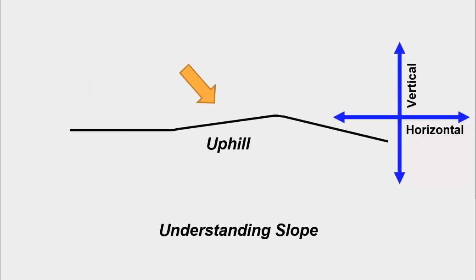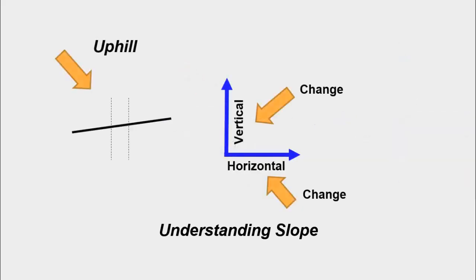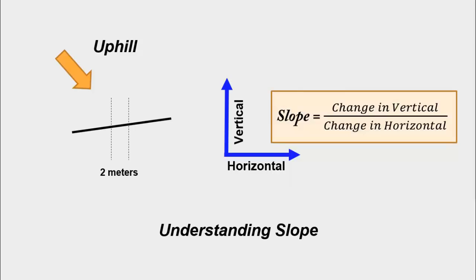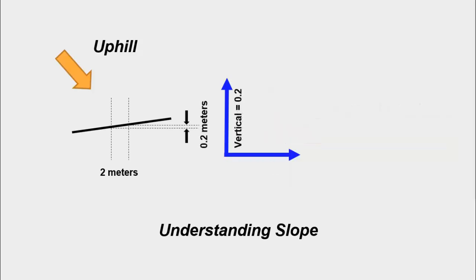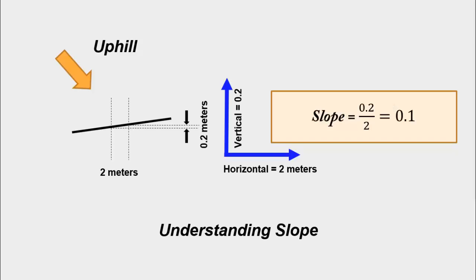Now let's look at the uphill region. With the same logic, let's pick a region shown and look at the change in the vertical and divide it by the change in the horizontal. Again, calculate the slope. The vertical change here is positive 0.2 meters, and the horizontal change is positive 2 meters. So the slope is just 0.2 divided by 2, which is 0.1. So an uphill slope is greater than 0, and always a positive number.